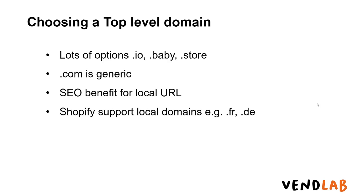There is a certain SEO or search engine benefit from having a local URL. So if you have a French site you could be .fr and a German site would be .de. Within Shopify it does support having different domains for different countries. My recommendation is to choose .com if you want to appeal to buyers in a number of different countries. If you want to target a specific country, choose a domain for that country, for example .co.uk or .fr.